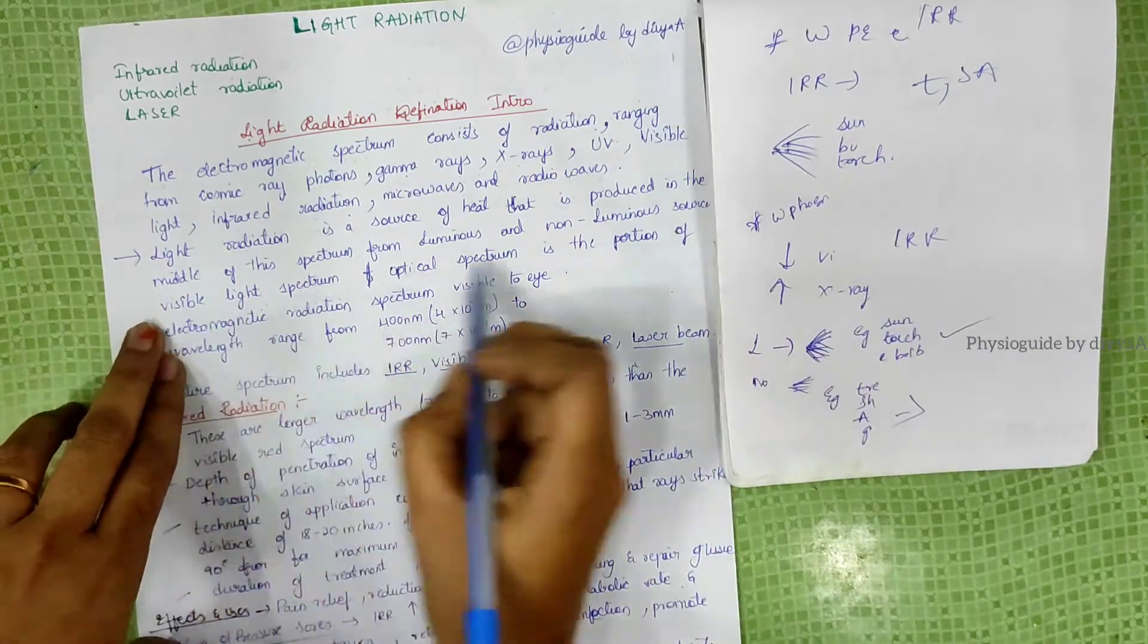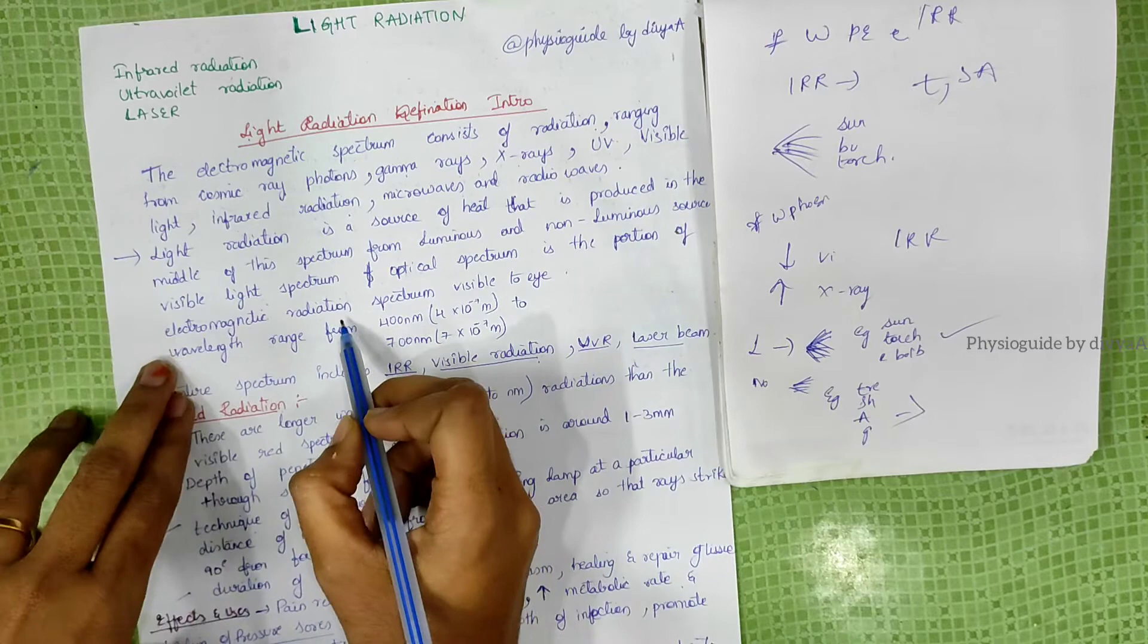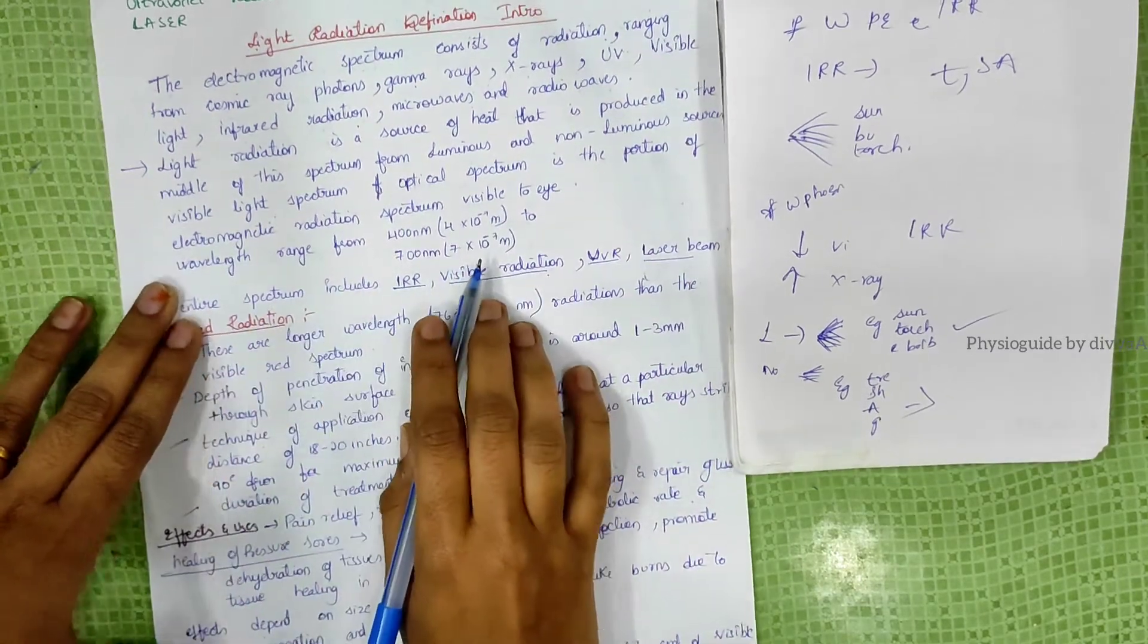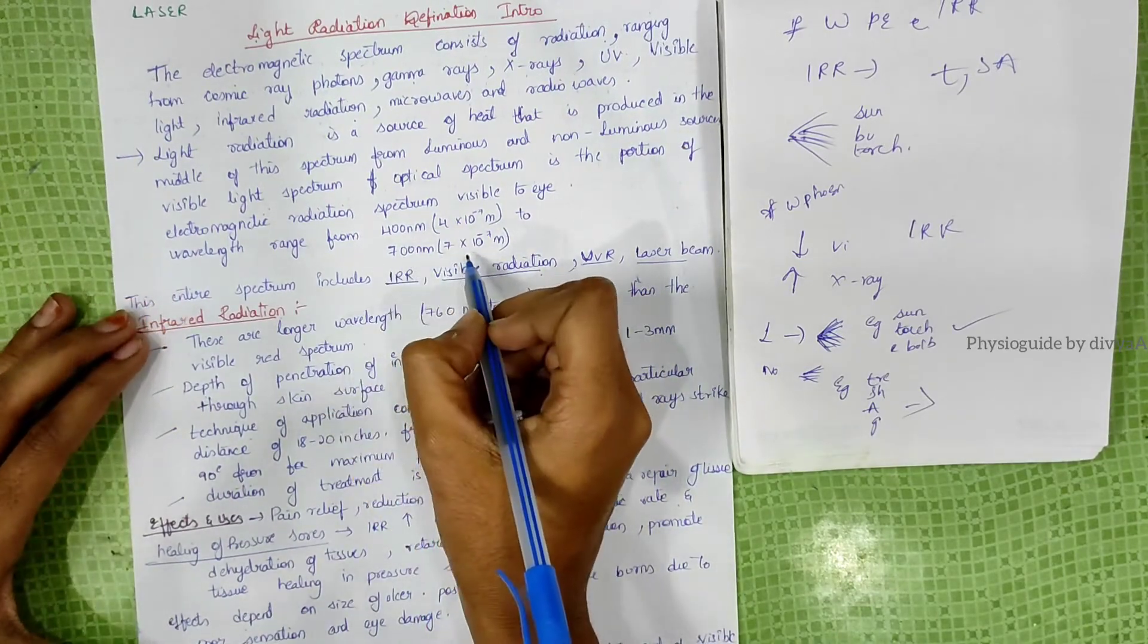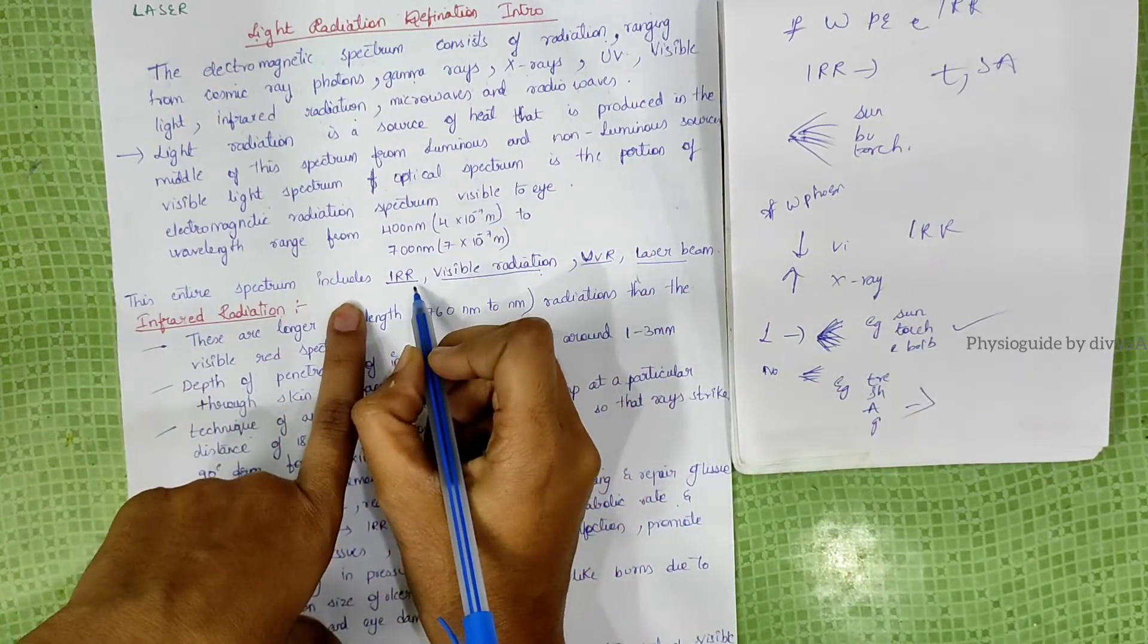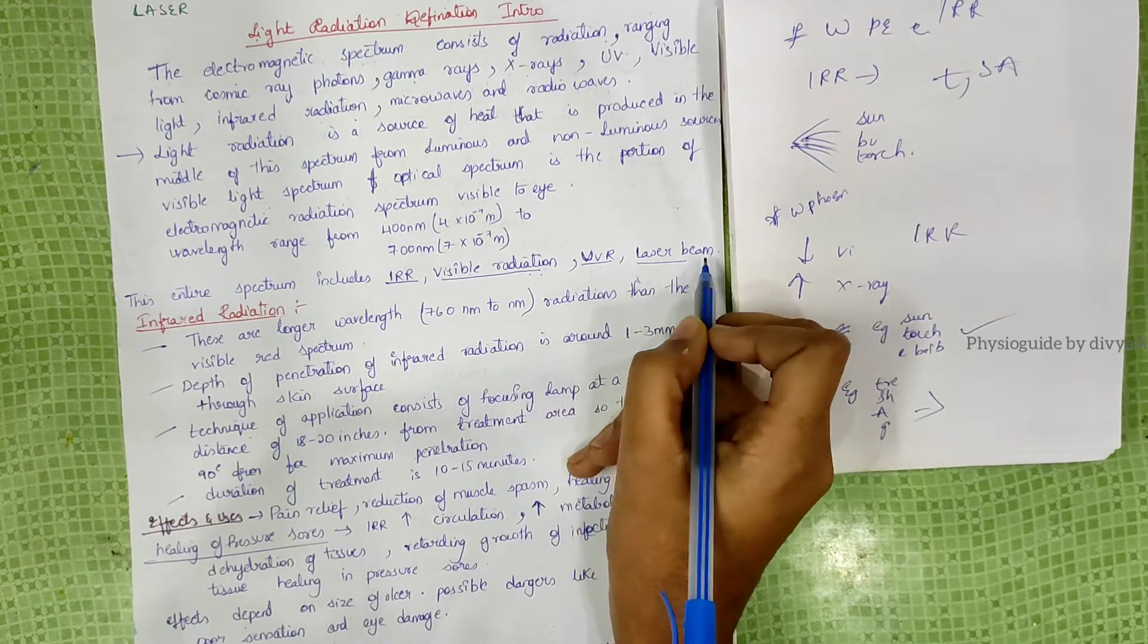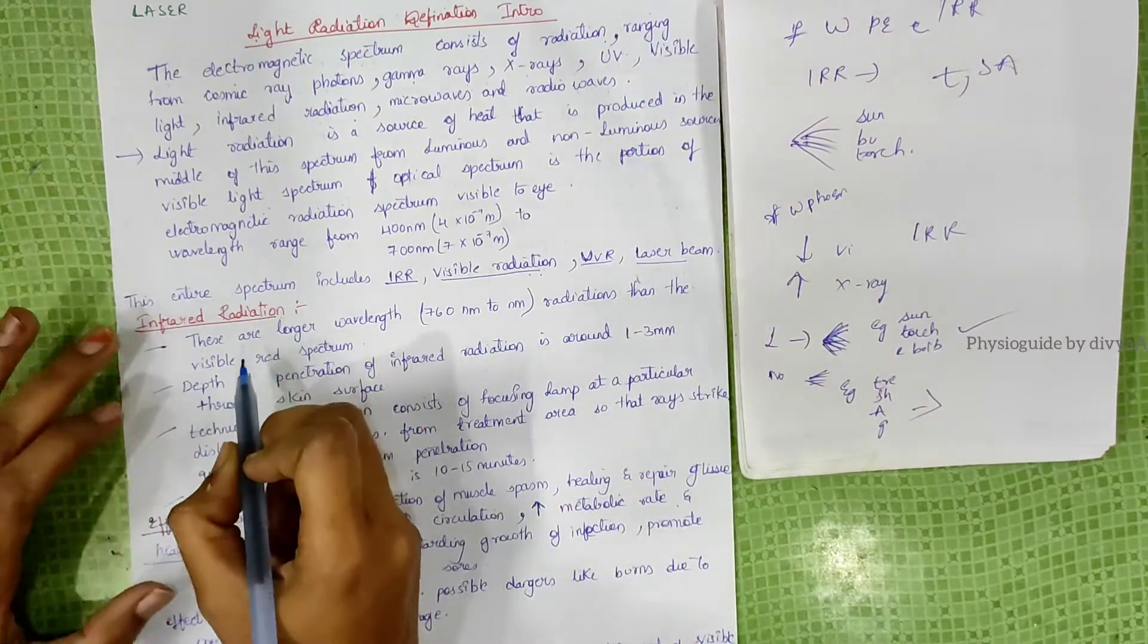Visible light spectrum, or optical spectrum, is a portion of the electromagnetic spectrum visible to the eye. The wavelength ranges from 400 nanometers to 700 nanometers. Light radiation includes infrared radiation (IRR), visible radiation, ultraviolet radiation (UVR), and laser beam.